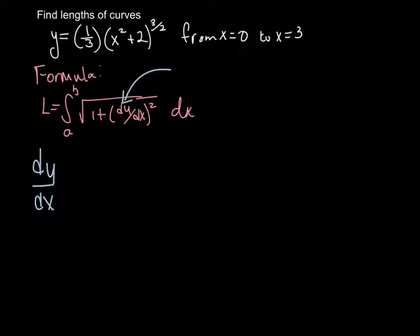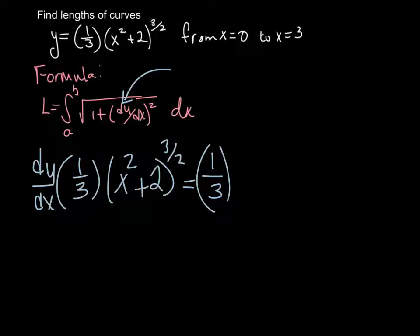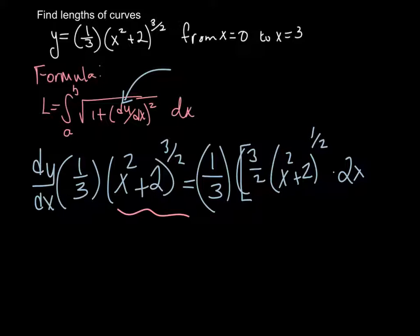So the derivative of 1/3 times x squared plus 2 to the 3/2 power. Throw the 1/3 out front. This piece right here is going to be a chain rule. So I'm going to bring down the 3/2. I'm going to leave the inside alone. Subtract 1, 3/2 minus 1 or 3/2 minus 2/2, which would be 1/2. And chain rule says times the derivative of the inside. Well, the derivative of x squared is just simply 2x.